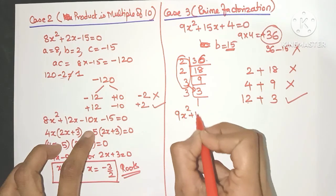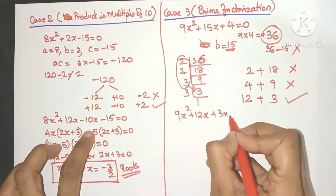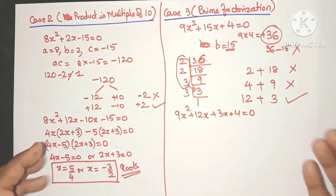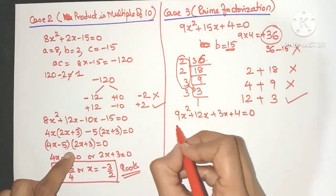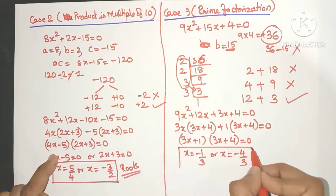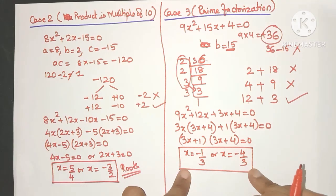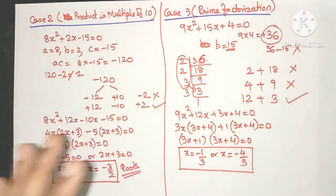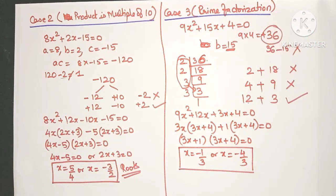So we write 9x squared plus 12x plus 3x plus 4 equal to 0, then take out common factors to find the two values of x — the roots of the equation.